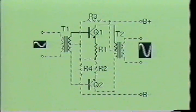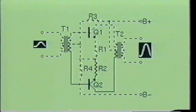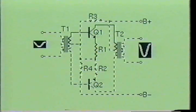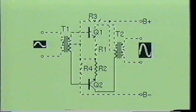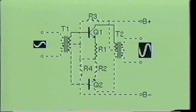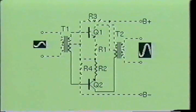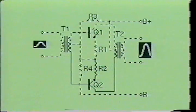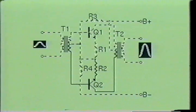Distortion cannot be avoided in a class B amplifier. Therefore, it is common practice to drive the amplifiers as hard as possible to obtain the maximum efficiency. Class B amplifiers are used where high efficiency and high output power is required and where a small amount of distortion can be tolerated. The typical efficiency of the class B amplifier will be around 50 to 60 percent.